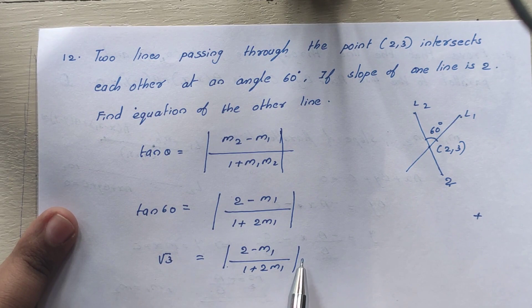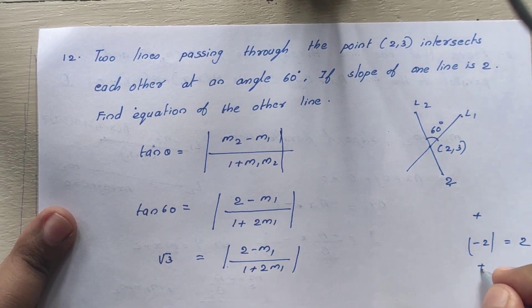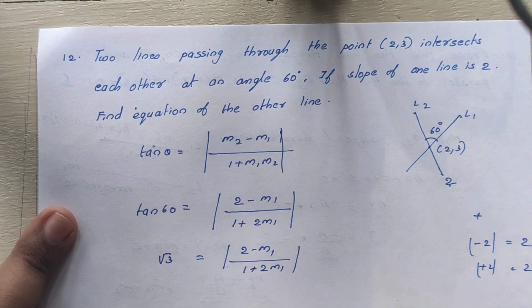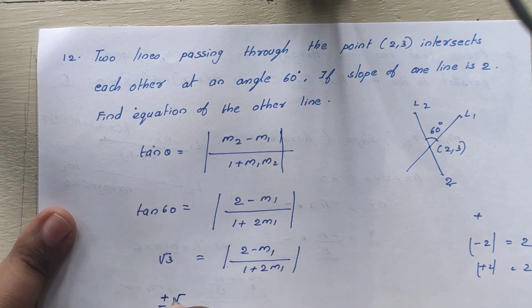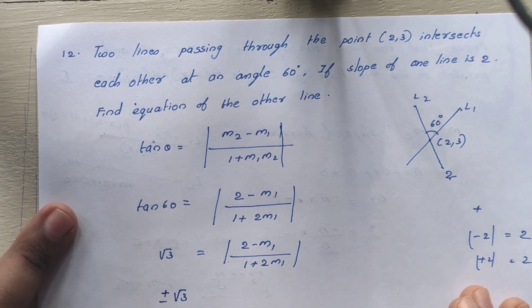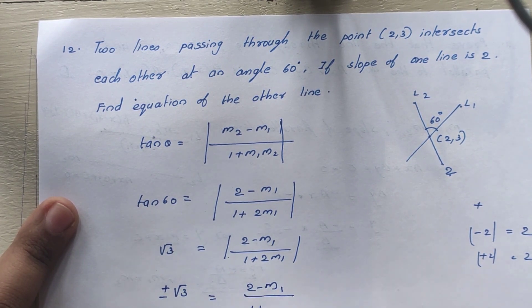Now applying the modulus sign, which means plus or minus: ±√3 = (2 - M1) / (1 + 2*M1).